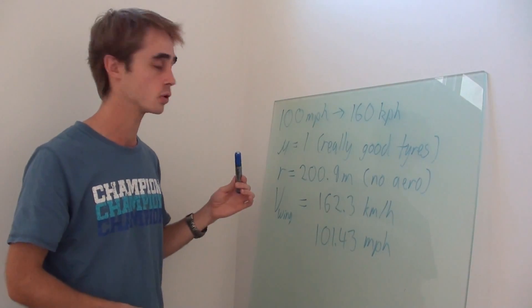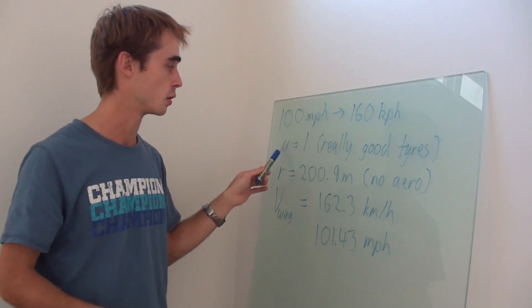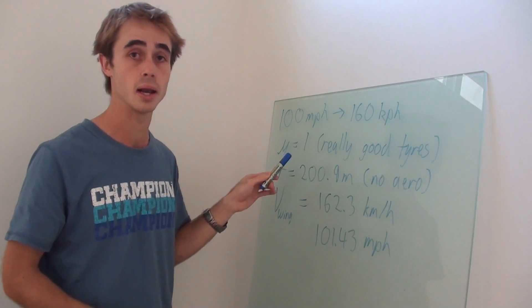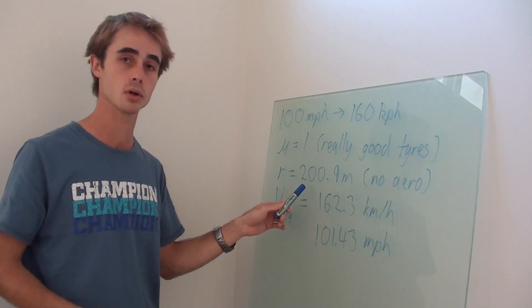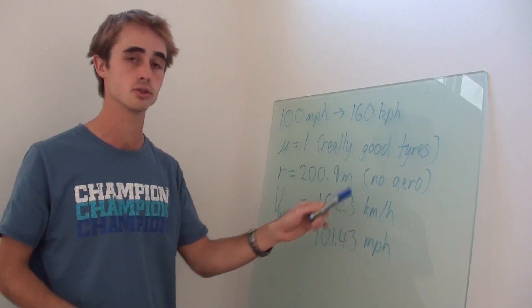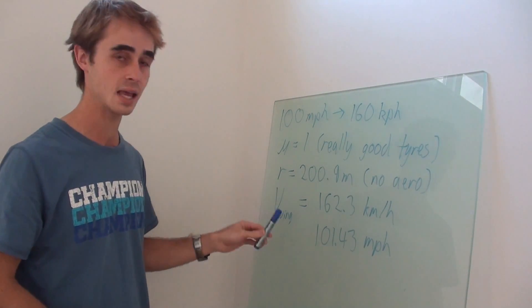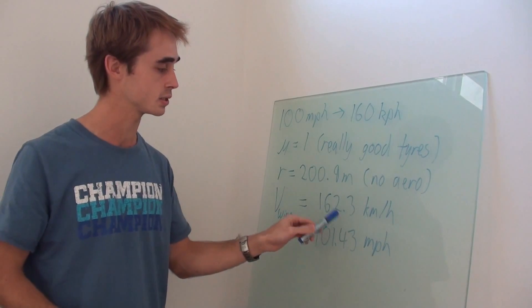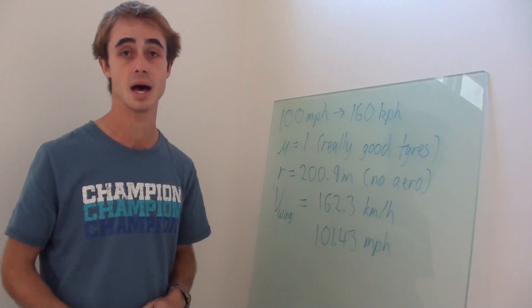So if we assume a 1.4 tonne car entering a corner at 100 miles an hour on tires with a coefficient of friction of one, which is really good for a road tire, our cornering radius at limit grip is 200.9 meters with no aerodynamics. Now, if we add a wing, the calculations work out that for the same corner, we can enter at 162.3 kilometers an hour or 101.43 miles an hour.